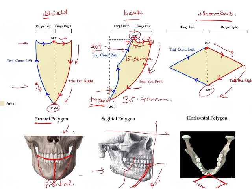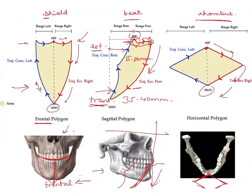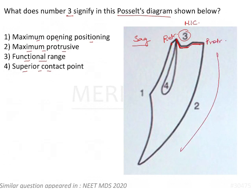Just go through the image of the movement and the plane to correlate — then it becomes very easy. Now the question is: what is No. 3? Like I told you, this is from the sagittal position, in the sagittal cross-section — Posselt's diagram. This is maximum intercuspation; this is the most retruded position; this is how your anteriors glide over each other and come to maximum protrusion. Then this is the mouth opening.